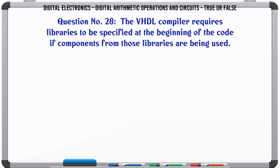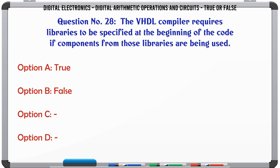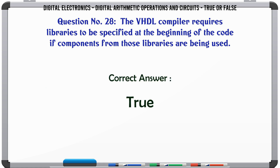The VHDL compiler requires libraries to be specified at the beginning of the code if components from those libraries are being used. True or False? The correct answer is True.